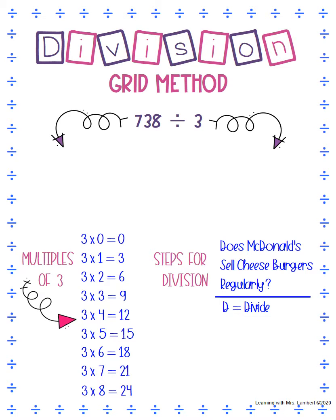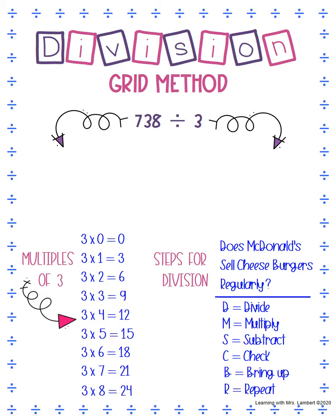Our D stands for divide, M stands for multiply, S is for subtract, C is for check, B is for bring up — if we were doing long division it would be bring down — and R is for repeat. When you're writing these out you don't have to write all of this; you can just write D, M, S, C, B, R, or just the symbols, but it's a good way to have a checklist to make sure you've done each step.